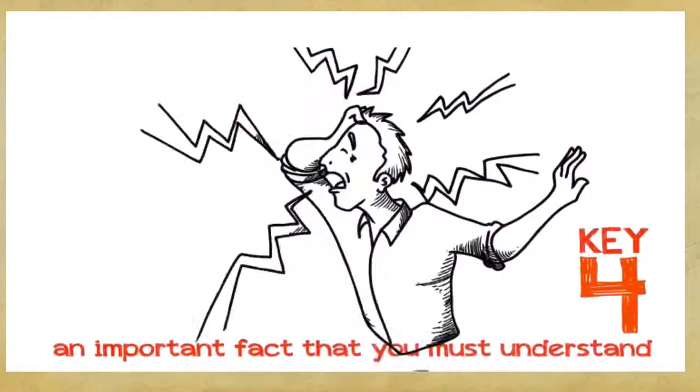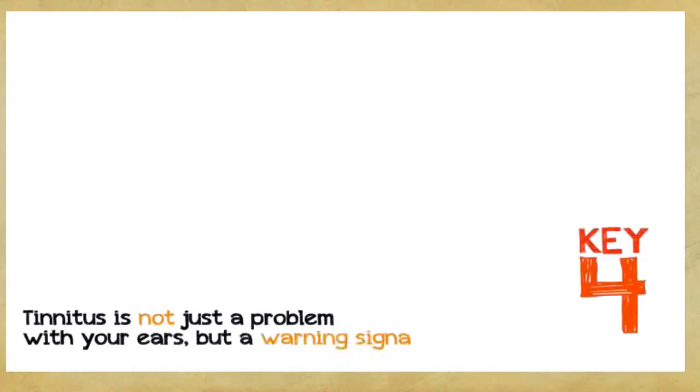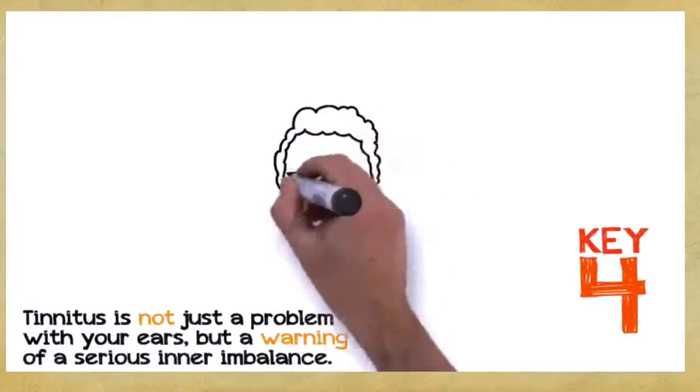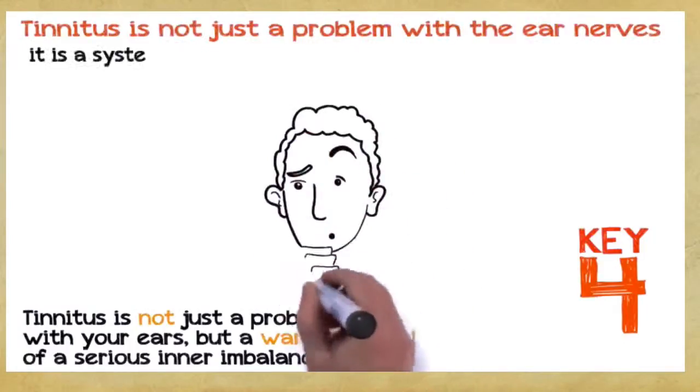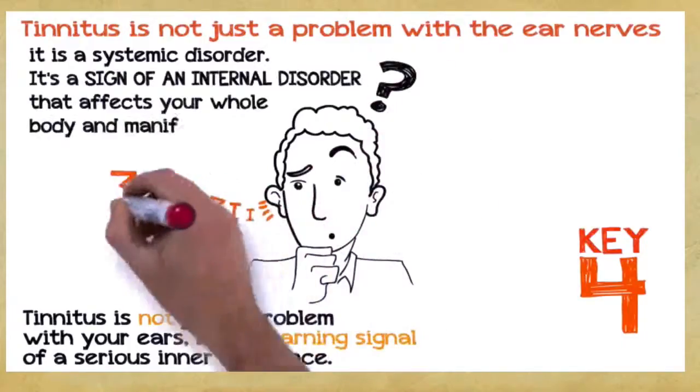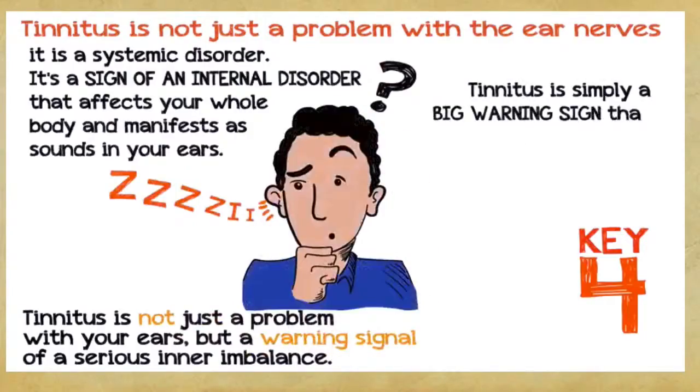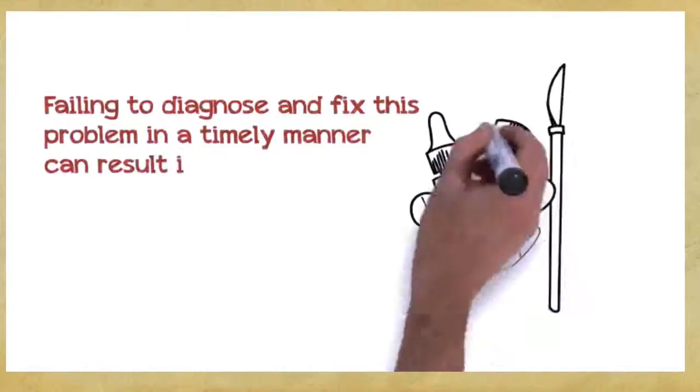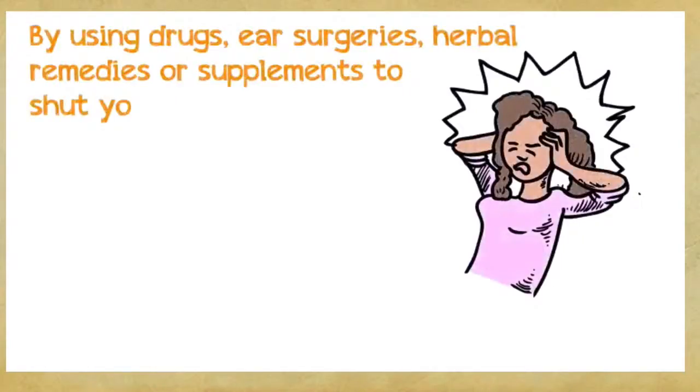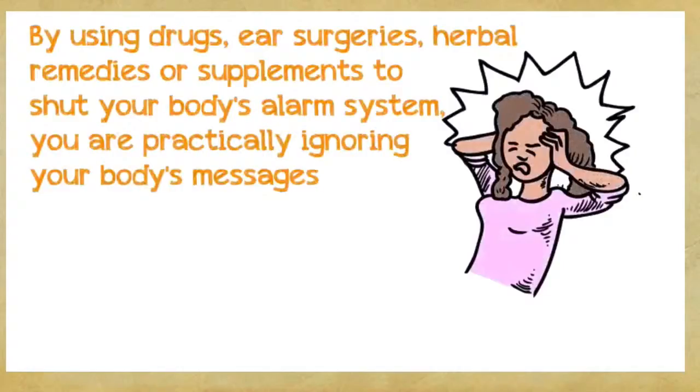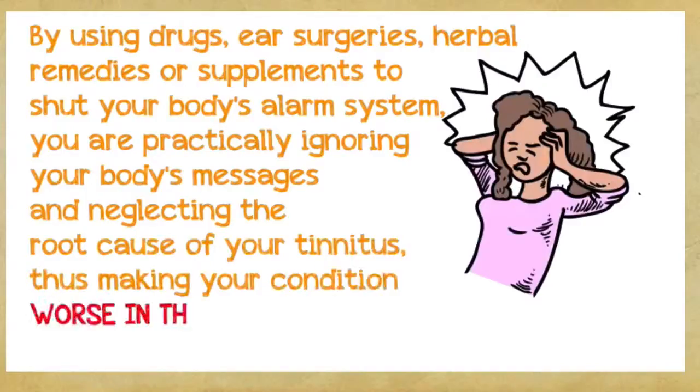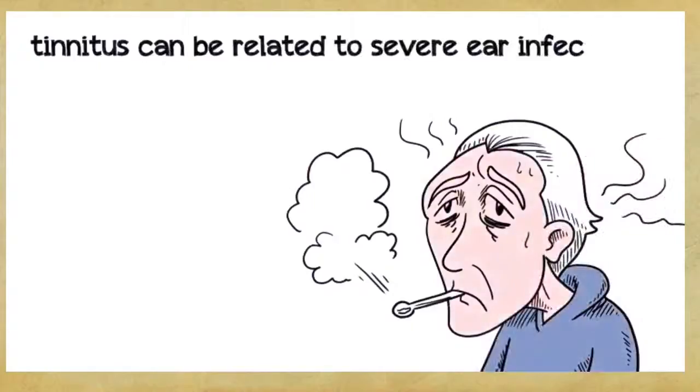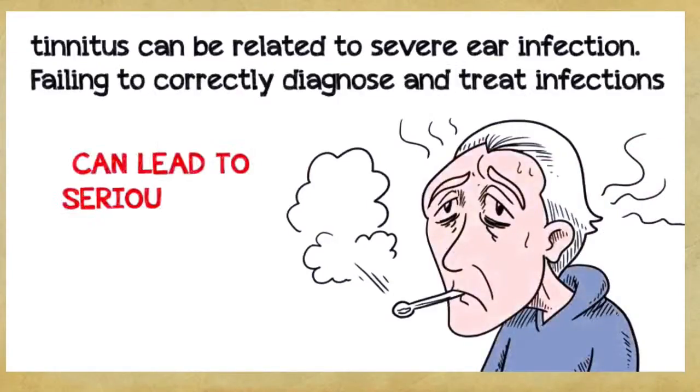Key number four: this is a very important fact that you absolutely must understand if you want to save hundreds or even thousands of dollars. Tinnitus is not just a problem with your ears, but a warning signal of a serious inner imbalance. In the vast majority of cases, tinnitus is not just a problem with the ear nerves, it's a systemic disorder. It's a sign of an internal disorder that affects your whole body and manifests as sounds in your ears. Tinnitus is simply a big warning sign that something inside your system is wrong and needs to be corrected. Failing to diagnose and fix this problem in a timely manner can result in a far more severe and chronic disorder, which can seriously endanger your health. By using drugs, ear surgeries, herbal remedies, or supplements to shut your body's alarm system, you're practically ignoring your body's messages and neglecting the root cause of your tinnitus, thus making your condition worse in the long run. For example, tinnitus can be related to severe ear infection. Failing to correctly diagnose and treat infections can often lead to serious long-term health consequences.